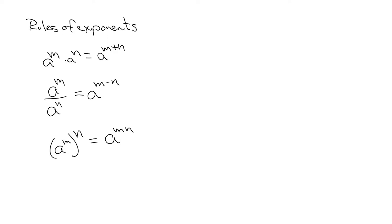When we are raising more than one factor to an exponent, what do we do? We actually distribute. We take this m and we give it to each one of those. So it's a to the m, b to the m.